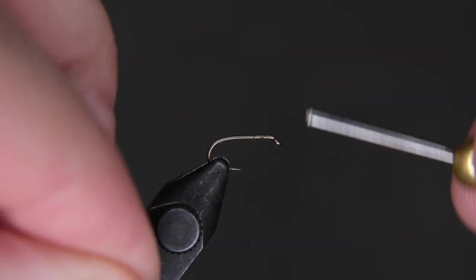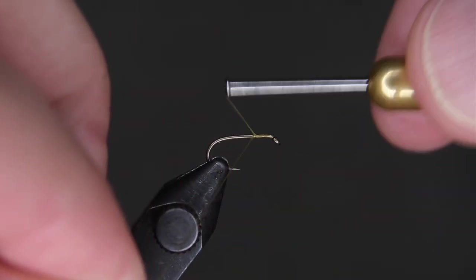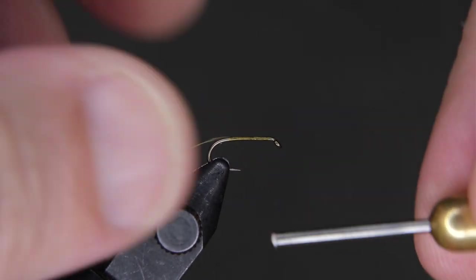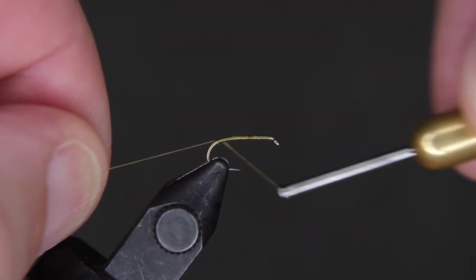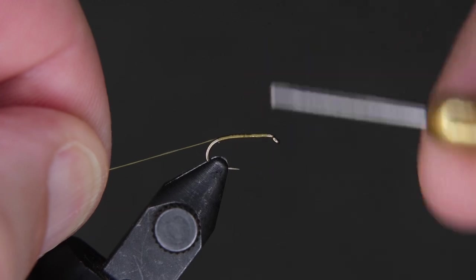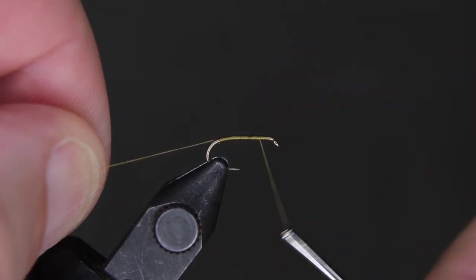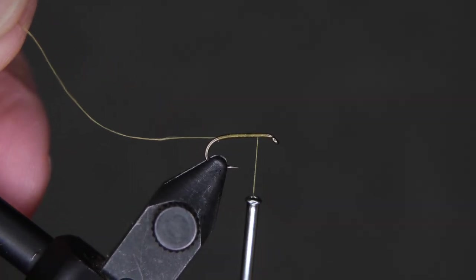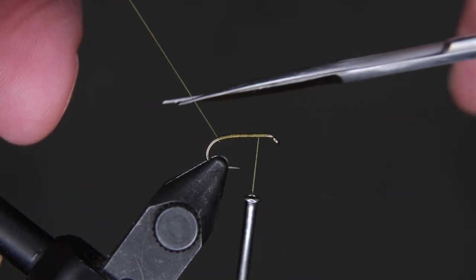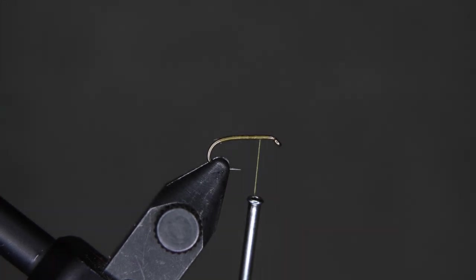Let's do a couple wraps to the right, and then we'll go back. I'm going to wind all the way down, just past the bend of the hook, and then all the way back to the front. While we're there, we're not quite all the way, but hook eye back, clip off your tag end.